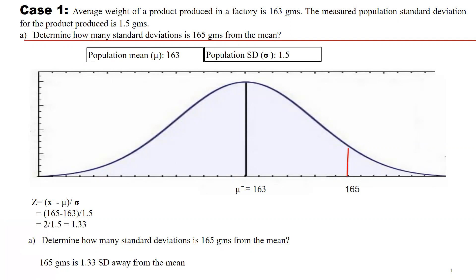How will we solve this problem? Population mean is 163 grams. Population standard deviation is 1.5 grams. Both these things are already given. With the help of these two data - population mean and population standard deviation - we want to calculate standard deviation for 165 grams from the mean.